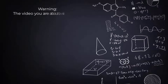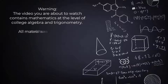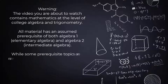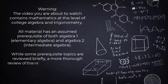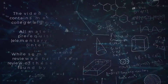Warning! The video you're about to watch contains mathematics at the level of college algebra and trigonometry. All material has an assumed prerequisite of both Algebra 1, which is Elementary Algebra, and Algebra 2, which is Intermediate Algebra. While some prerequisite topics are reviewed briefly, a more thorough review of these entrance topics can be found by searching the web.